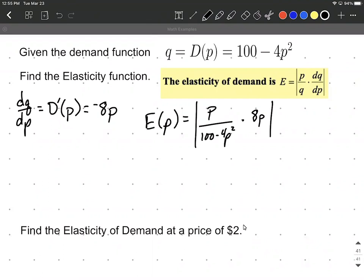Now we'll simplify this down. Oh, it was negative 8p. Let's make sure we put that in for now. Let's simplify it down by thinking of this as over 1. So we can multiply our numerators together, multiply our denominators together. So we can think negative 8p squared over 100 minus 4p squared,